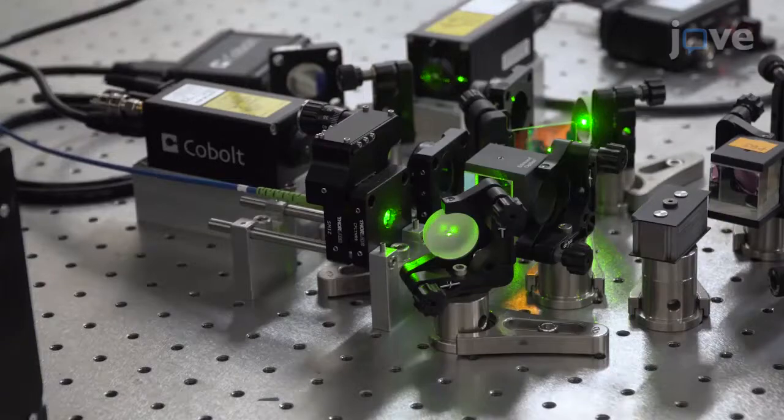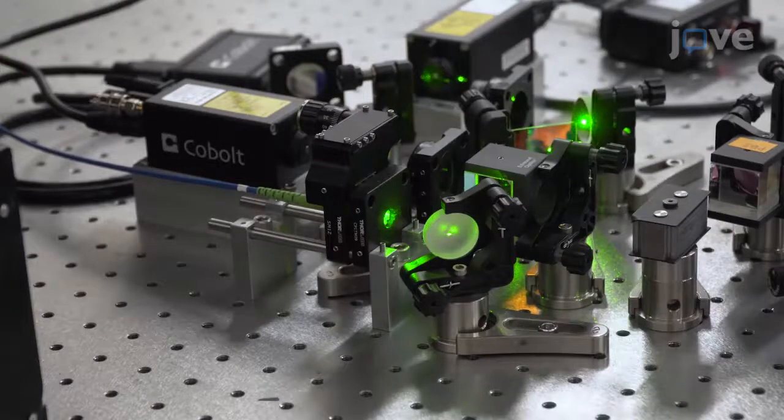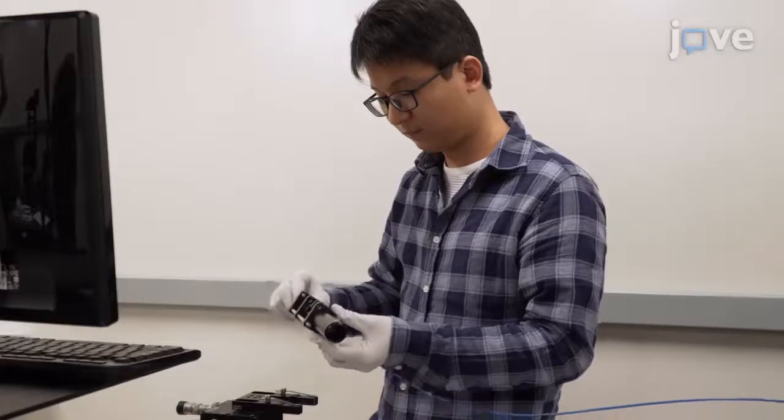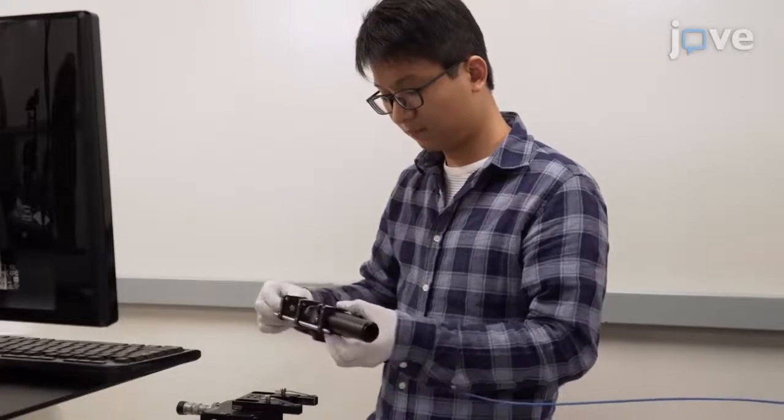The combined beams are coupled to a single-mode fiber as efficiently as possible. As a final preliminary step, assemble a collimated light source in a cage system.